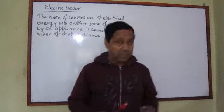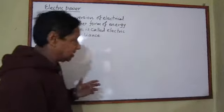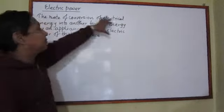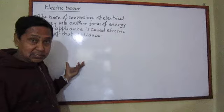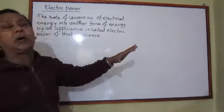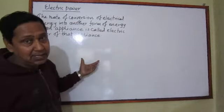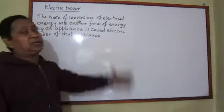Now, electric power means — we can define this systematically this way: the rate of conversion of electrical energy into another form of energy by an appliance is called the electric power of that appliance.